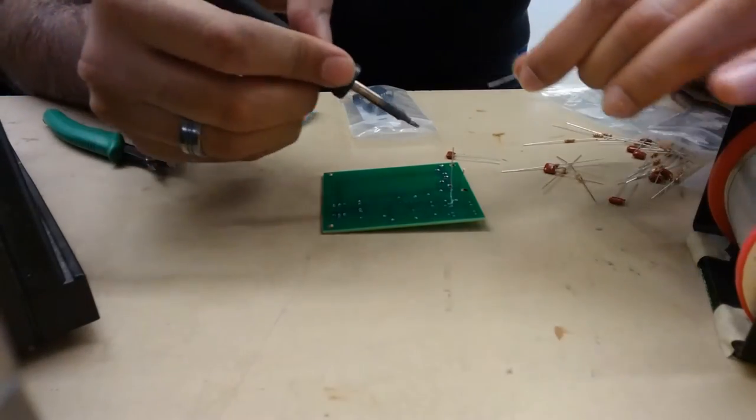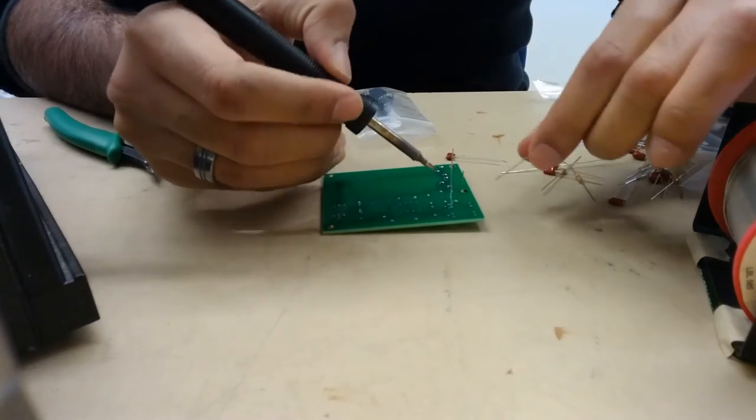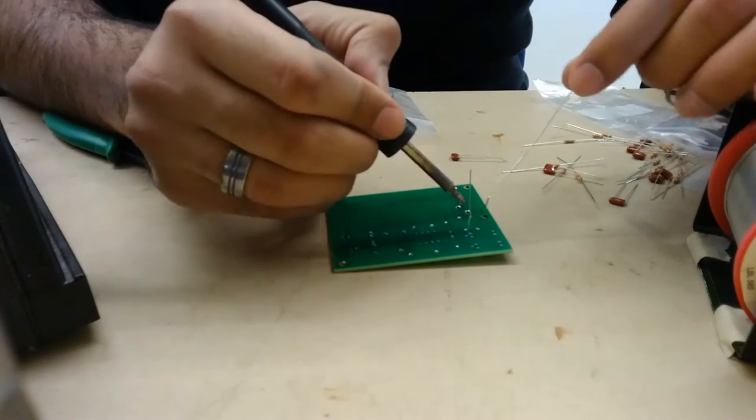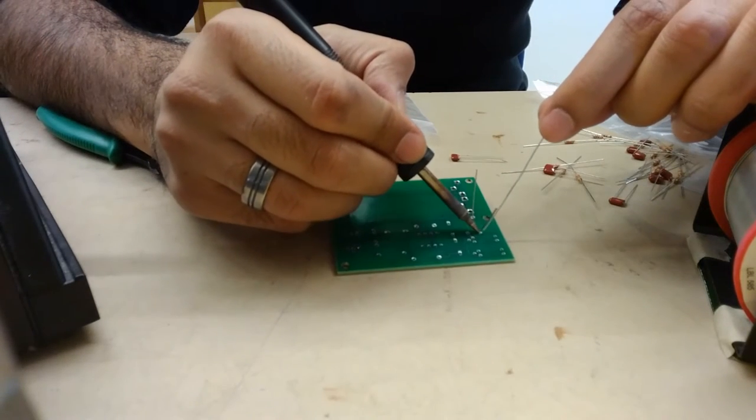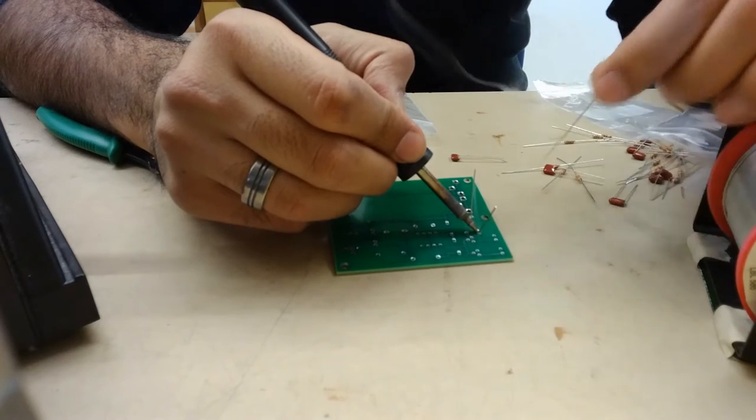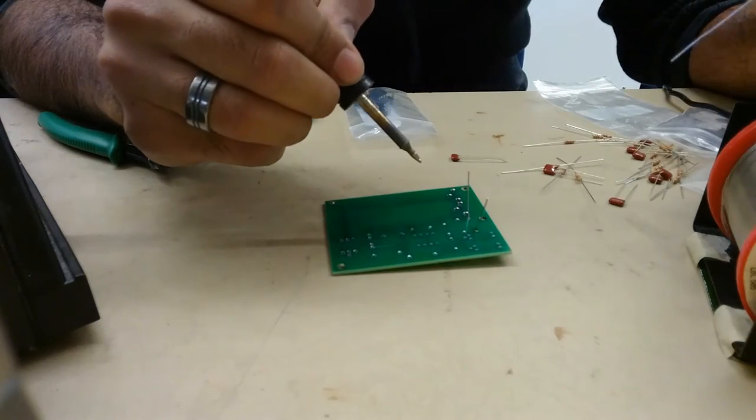So now we're going to follow our four-phase process. First, we're going to apply heat. Then I'm going to flow the solder in, like so. Then notice how I leave the heat on for a little bit more before I remove the iron.